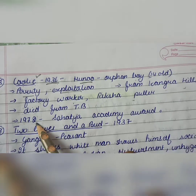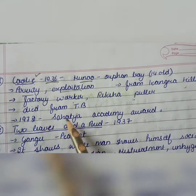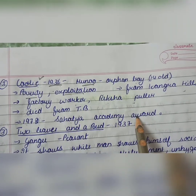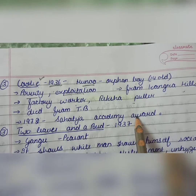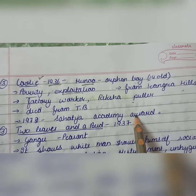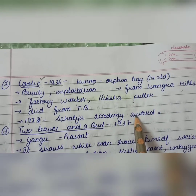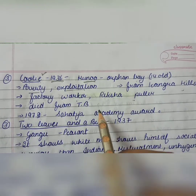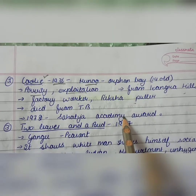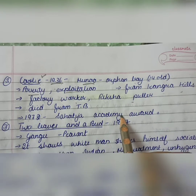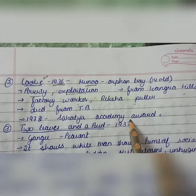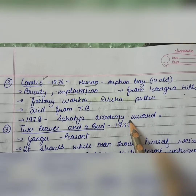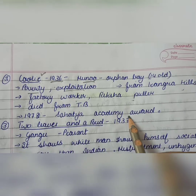In 1972, Mulk Raj Anand received the Sahitya Academy Award. This award was not for any particular work — it was an overall achievement award.